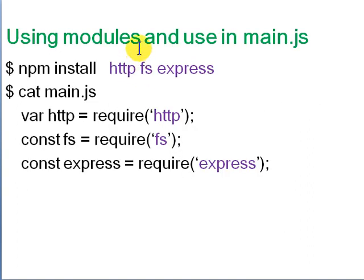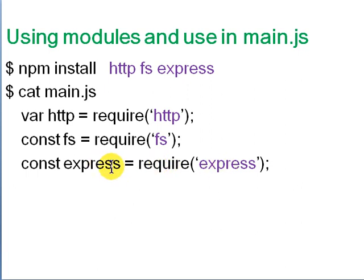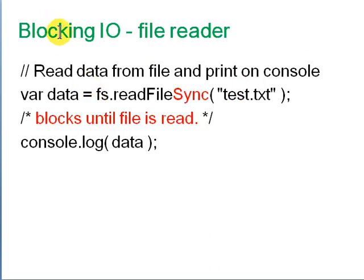To use modules, run 'npm install http', 'fs' (file system), and 'express' (for web services). To load them, write 'var http = require("http")' — this loads the http module. You can also use 'const' instead of 'var'; const means the value cannot change, which is safer when you know you won't reassign it. Express is another package for serving data.